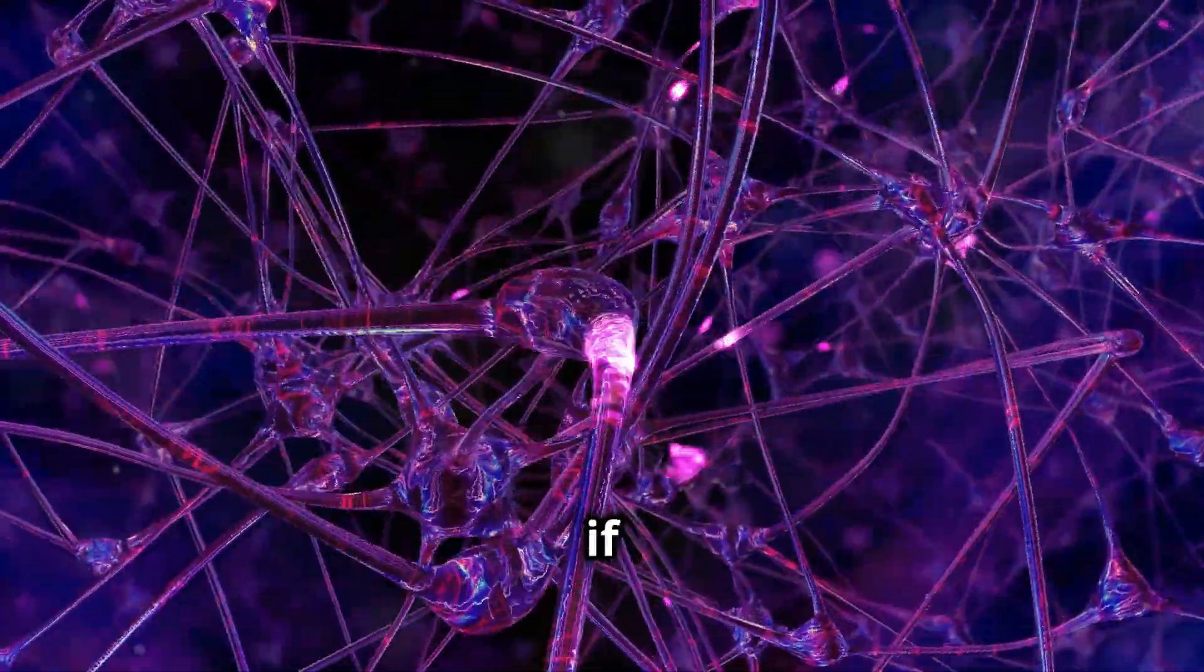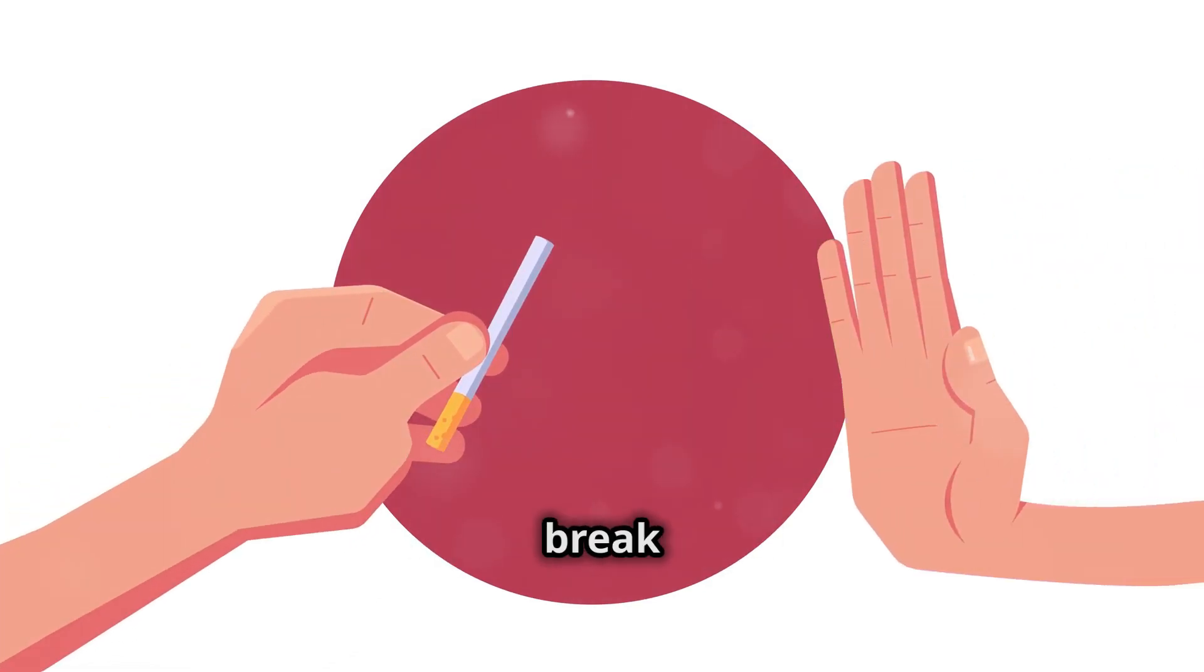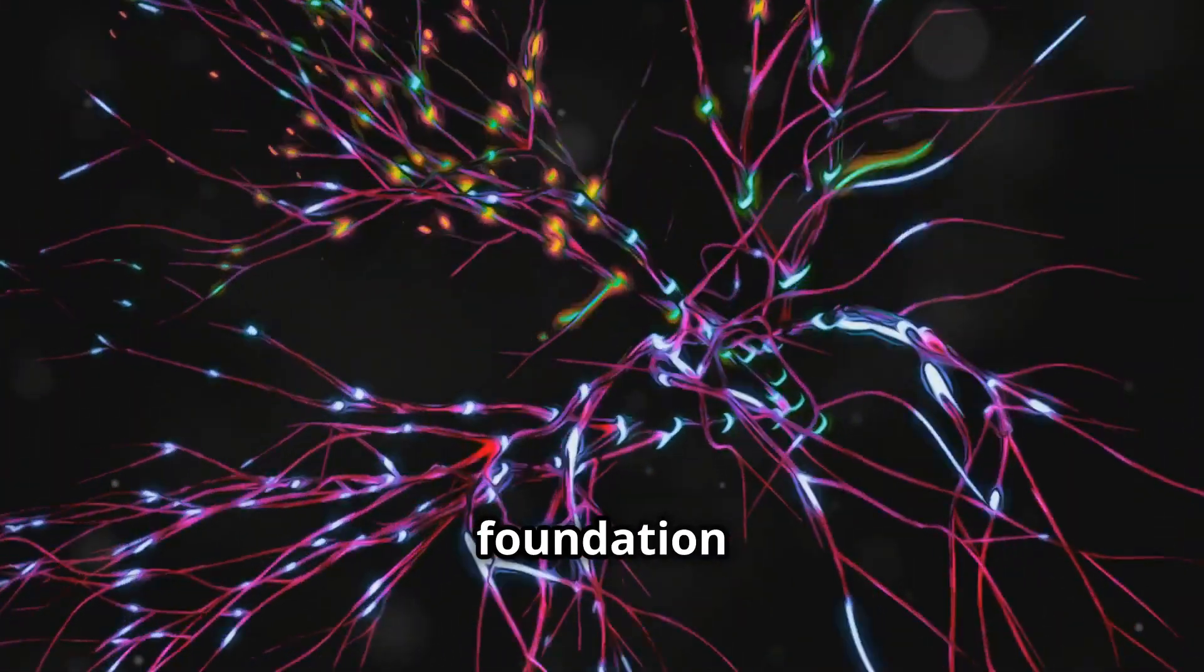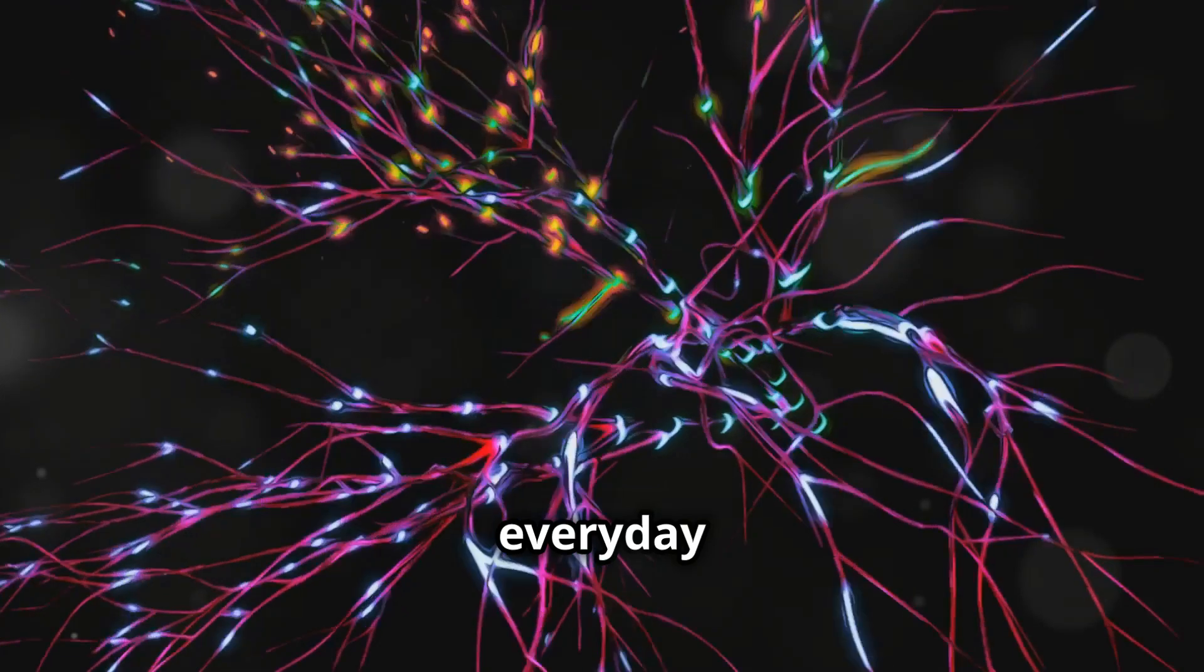Conversely, if neurons are not activated together, their connection weakens. This is how we break old habits. Hebbian learning is the foundation of how neuroplasticity works in everyday life.